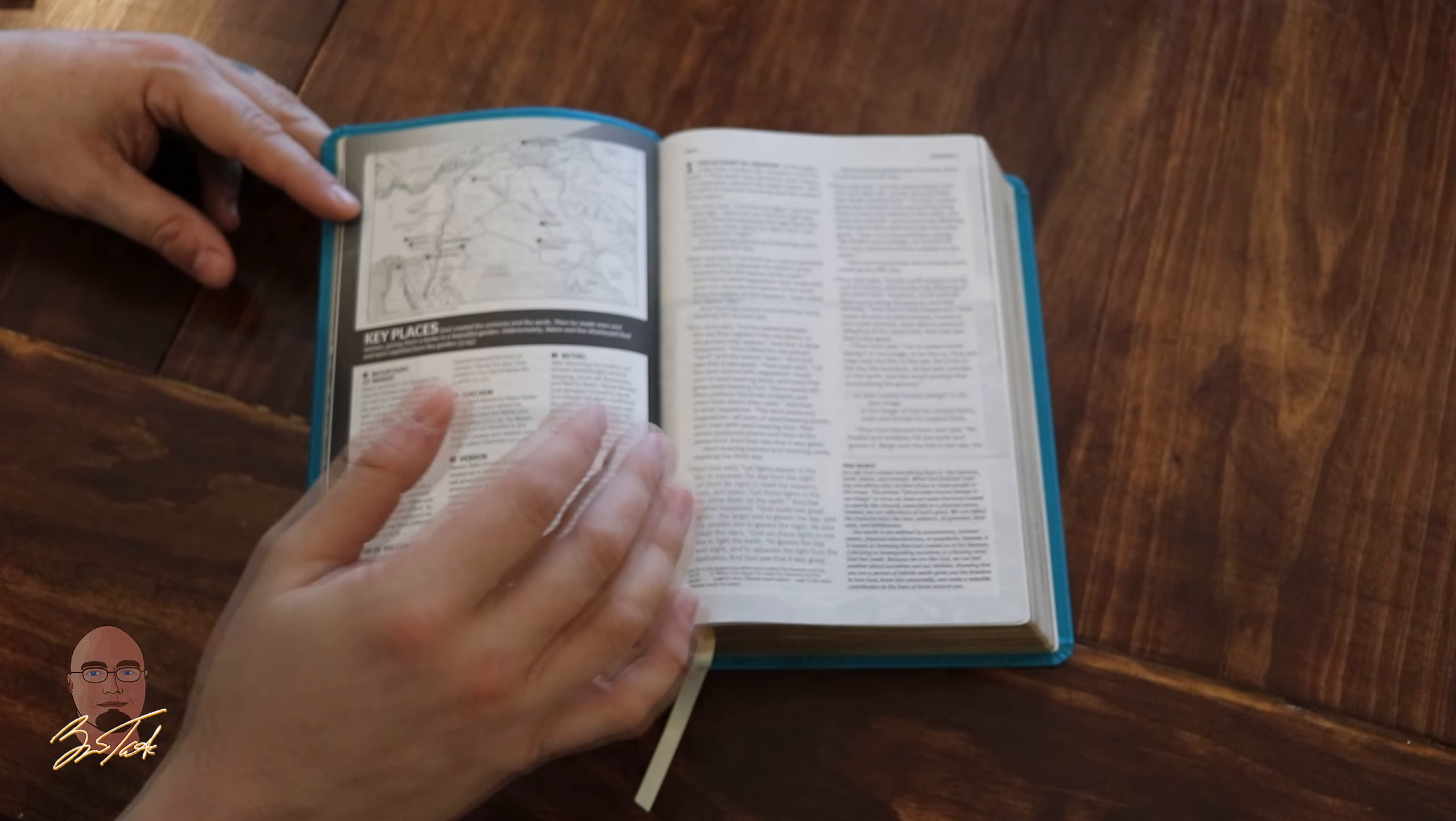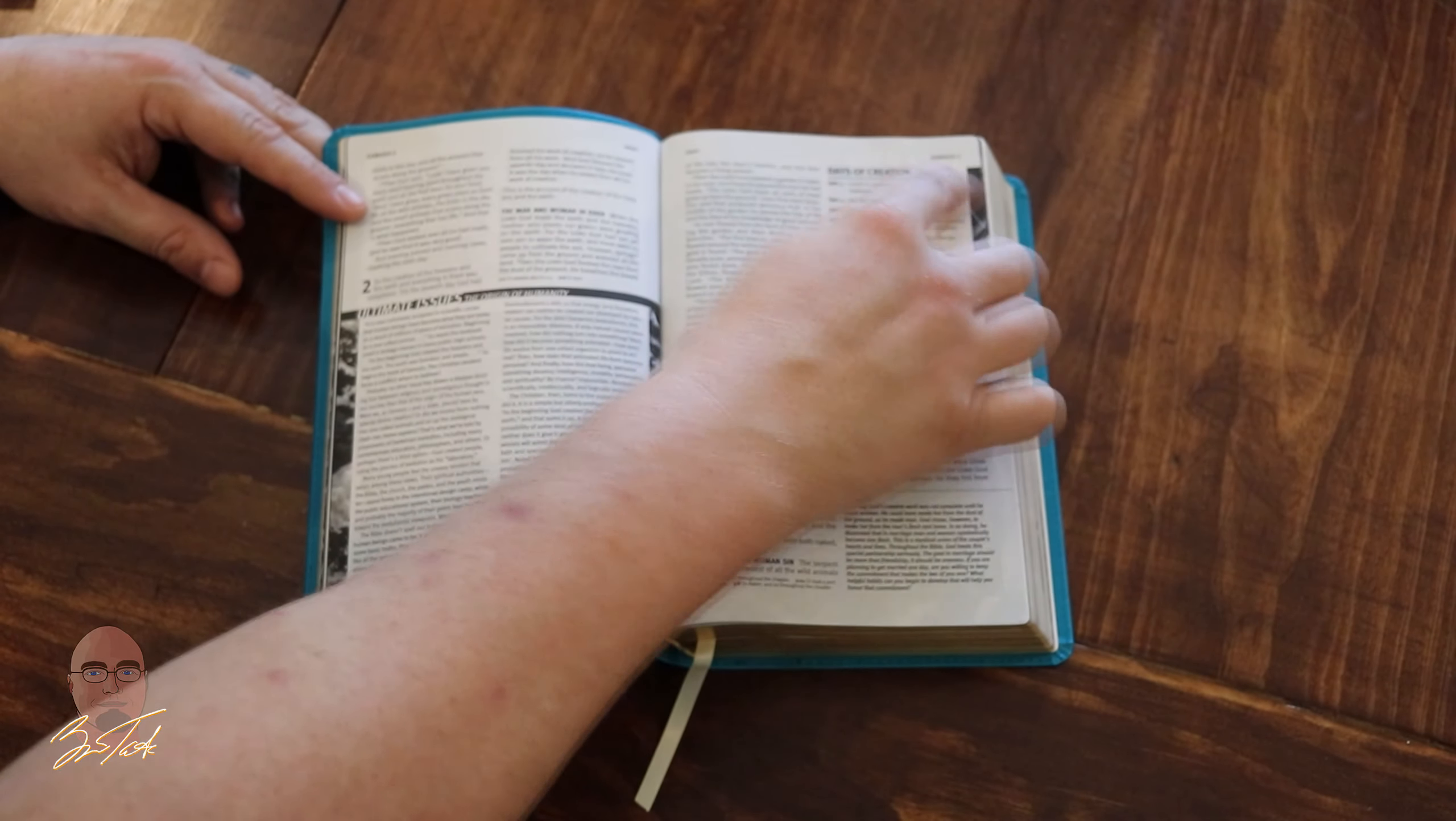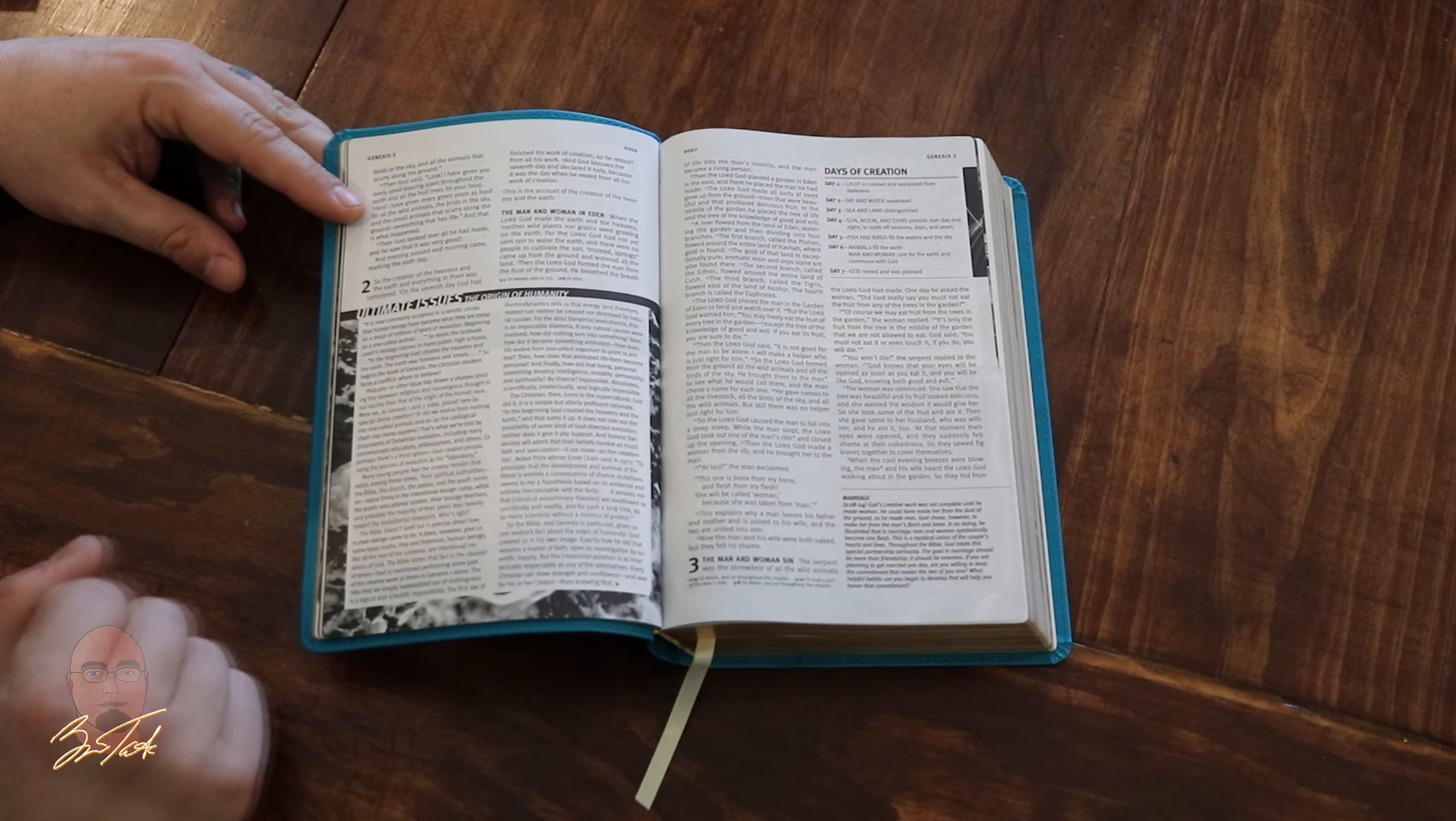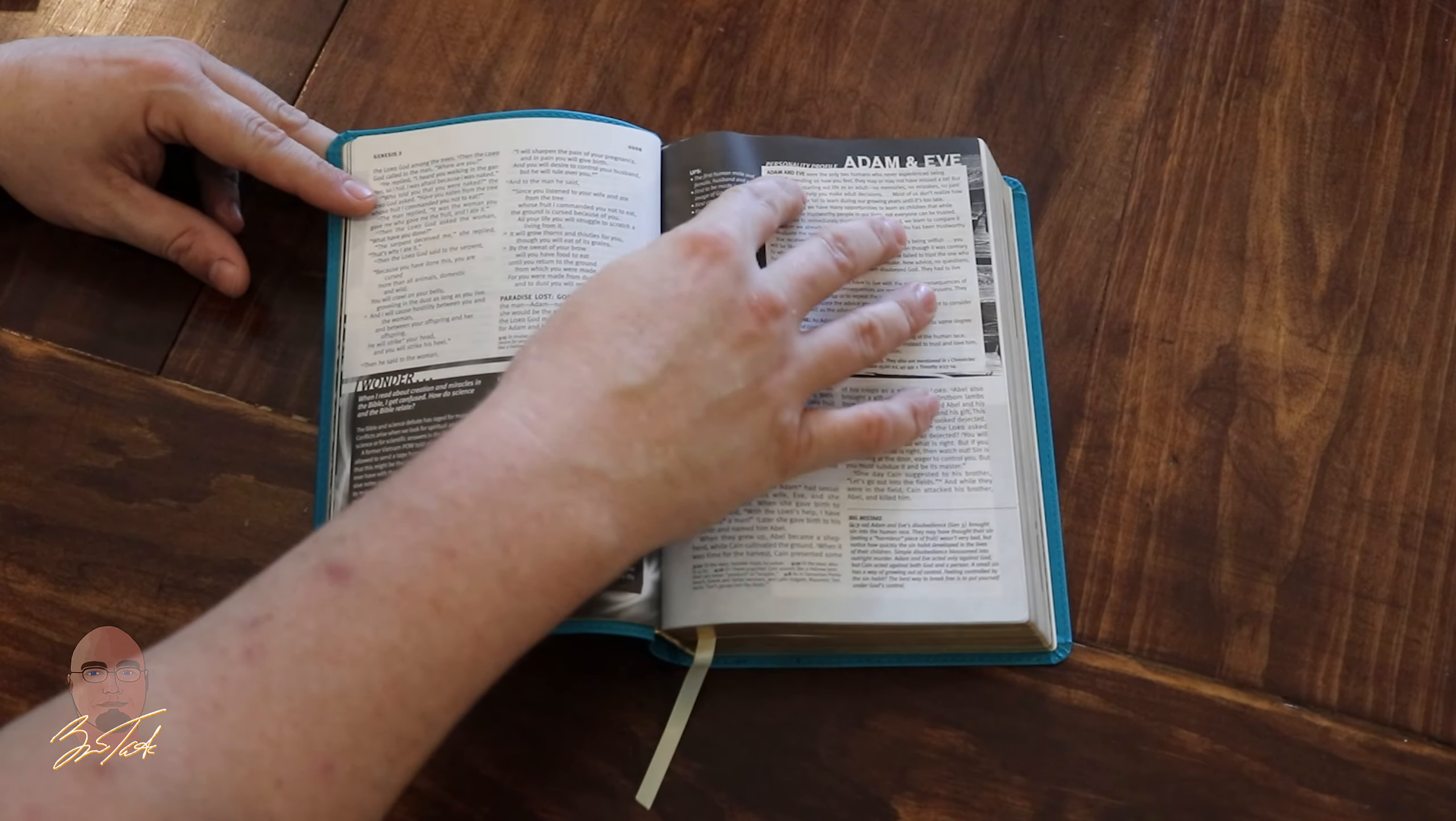You have 'Ultimate Issues' like this big section, 'Days of Creation,' as a graph. You get just as much on the days of creation as you do the notes. I think that's a good thing; I think that's what's needed for a teenager. You need things like these, but I really think they need to be in color so they're more interesting.